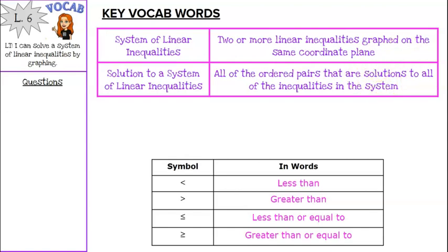At the bottom, we have a chart with our symbols and what they mean in words. Just a reminder: we have less than, greater than, less than or equal to, and greater than or equal to.